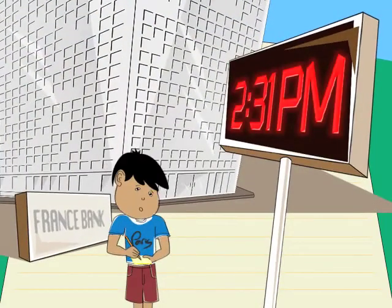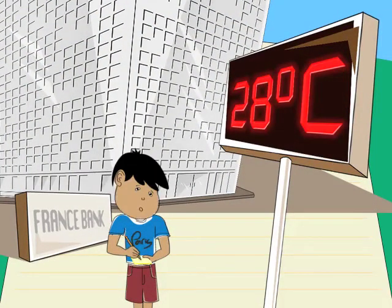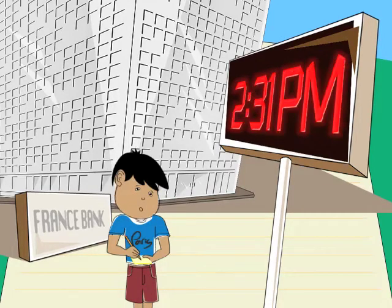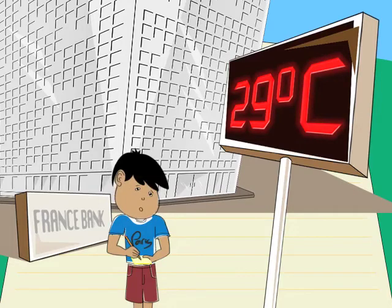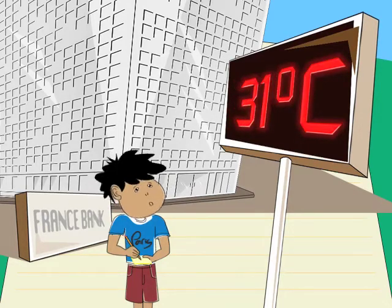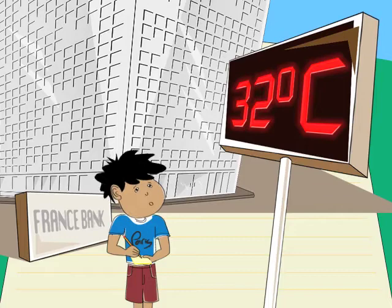But while you're standing there in front of the bank furiously calculating, the temperature rises to 29 degrees Celsius, and you have to do each step all over again, and again for 30 degrees or 31 or 32. Is there an easier way?